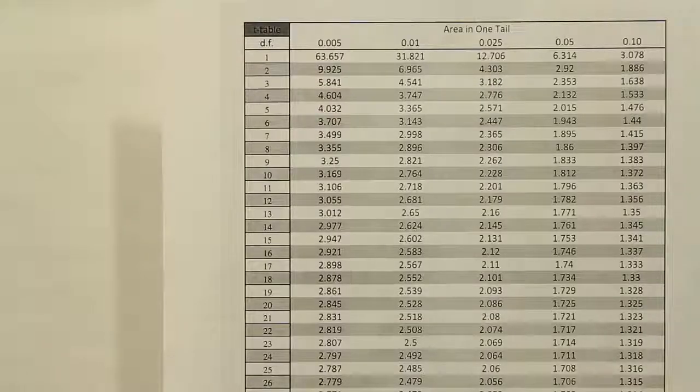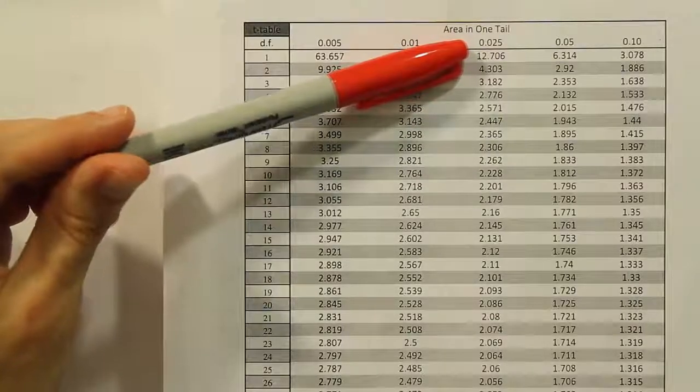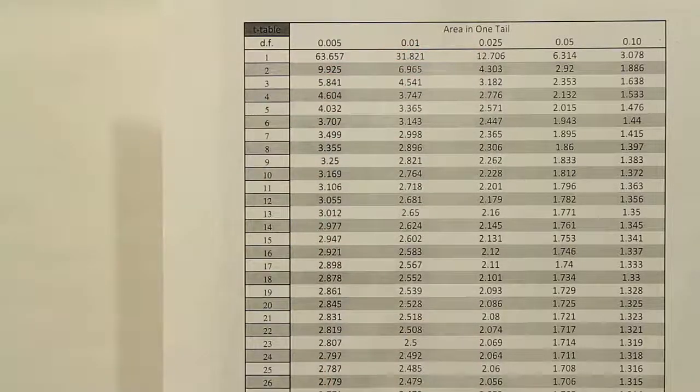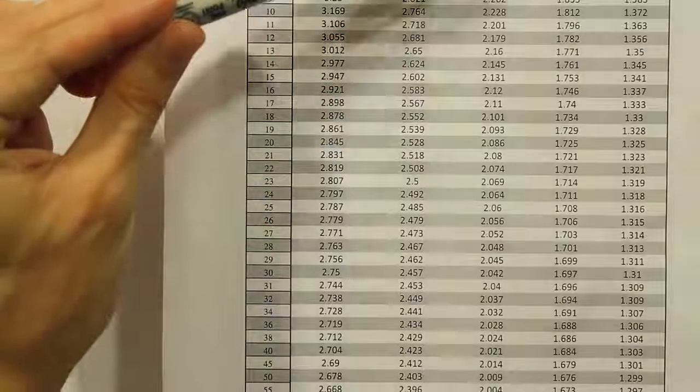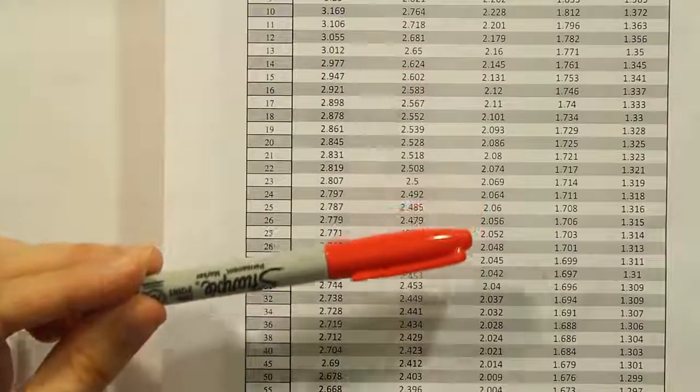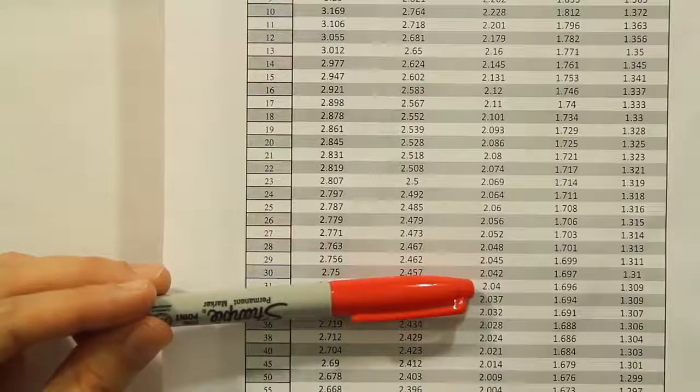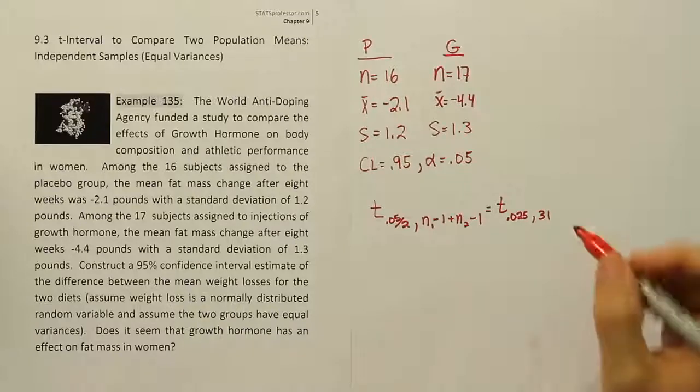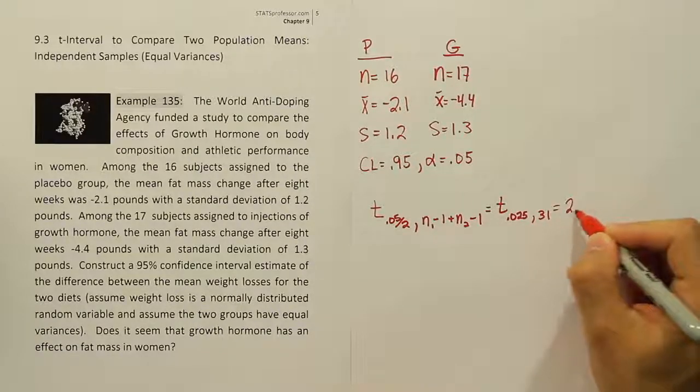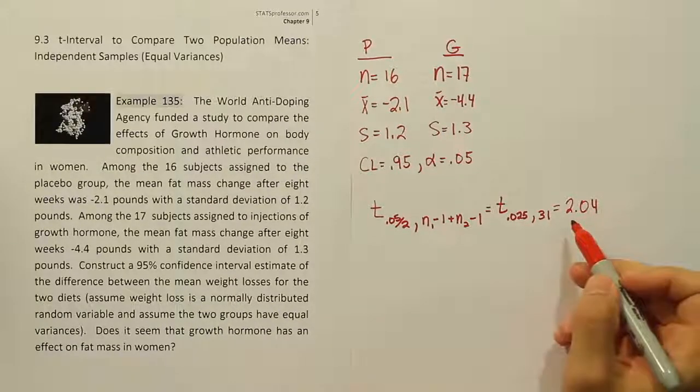Okay, so we're looking up 0.025 with 31 degrees of freedom. So we're just going to move the table up a little bit so we can see that line. And so coming down in this column all the way down until we see 31 degrees of freedom, we find the answer 2.04. So we found the answer to be 2.04.